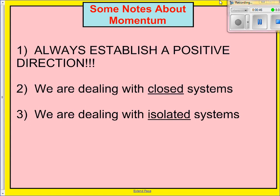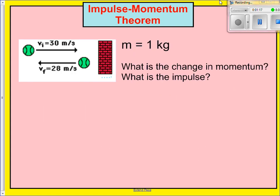Points two and three talk about how we are dealing with closed and isolated systems. What that means is any force or anything affecting the object is all going to be happening within a system. Basically, it means that momentum is conserved. So the same momentum you have at the beginning must be the same momentum you have at the end. With that being said, let's go ahead and move on to some practice problems.